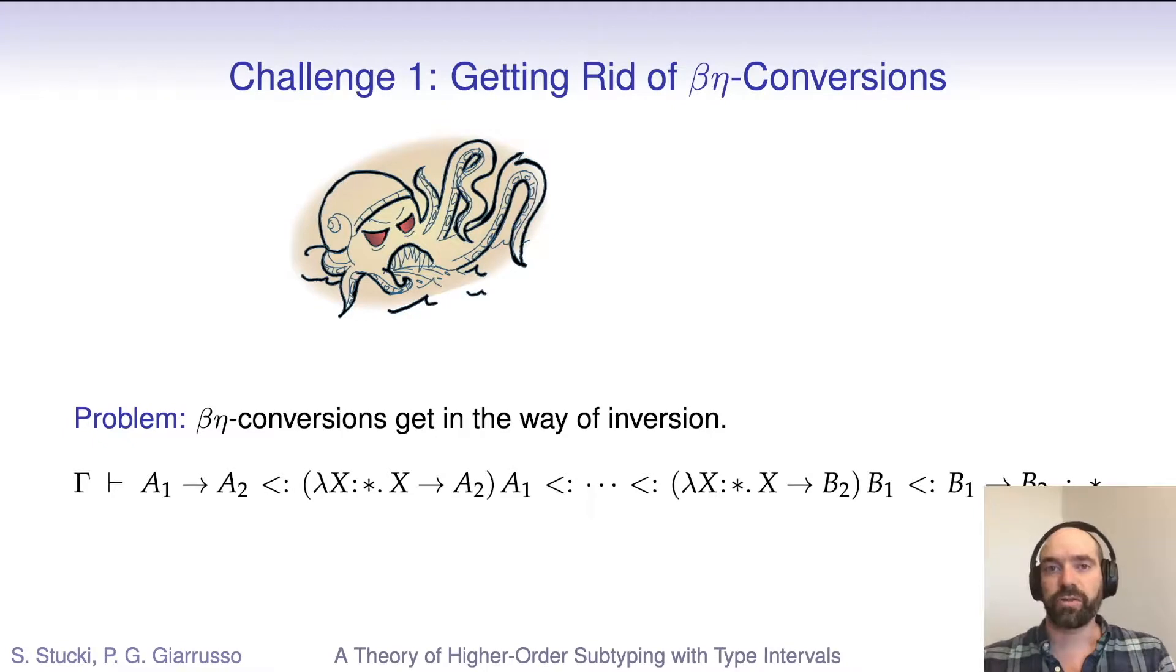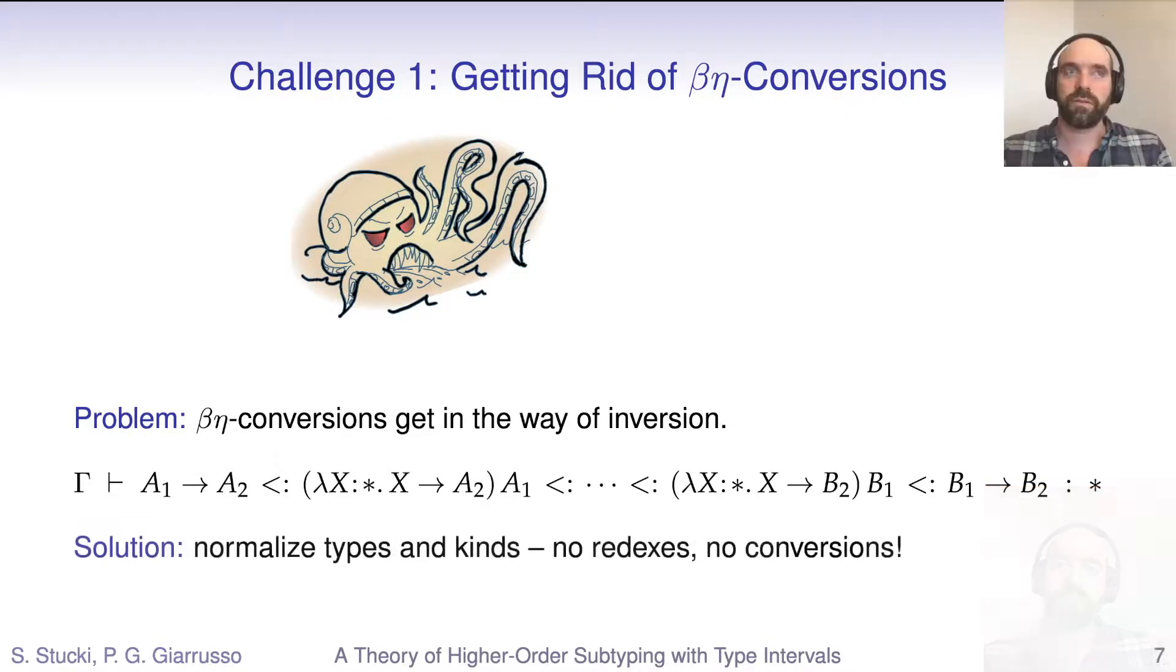The standard declarative subtyping judgment of F-omega-int is a bit of a monster. Besides the usual structural rules for subtyping, it also contains computation rules, and these rules can get in the way of a structural inversion. You can see this in the example judgment on this slide. On the left-hand side, there's an arrow type. Then we perform a beta expansion, so we get a type application. Then there are some intermediate steps that don't really matter. We get an application again, we beta reduce it, and we end up with an arrow type as well. But there's no telling whether and how these two arrow types are structurally related going through all of these computations.